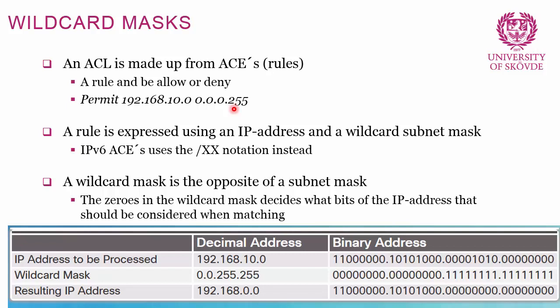Wildcard masks are used not only in ACLs but also in a couple of routing protocols. In a subnet mask, ones run from left to right, and the portion of ones indicates the network address while the rest is the host address. In a wildcard mask, leading zeros dictate how large a portion of the IP address must match an incoming packet for a match to occur.